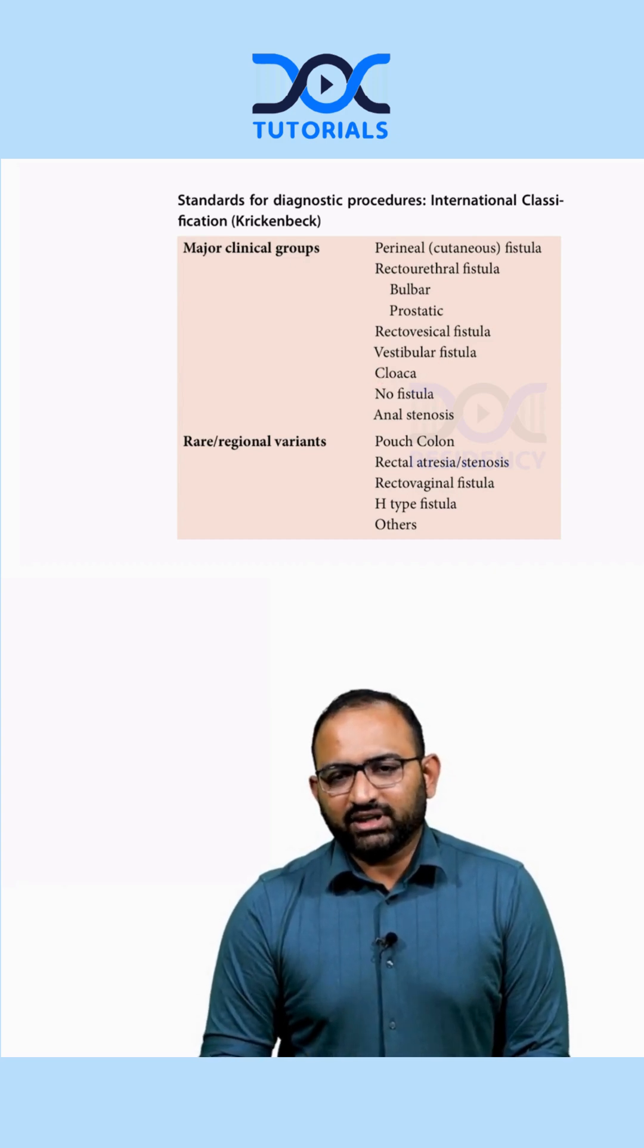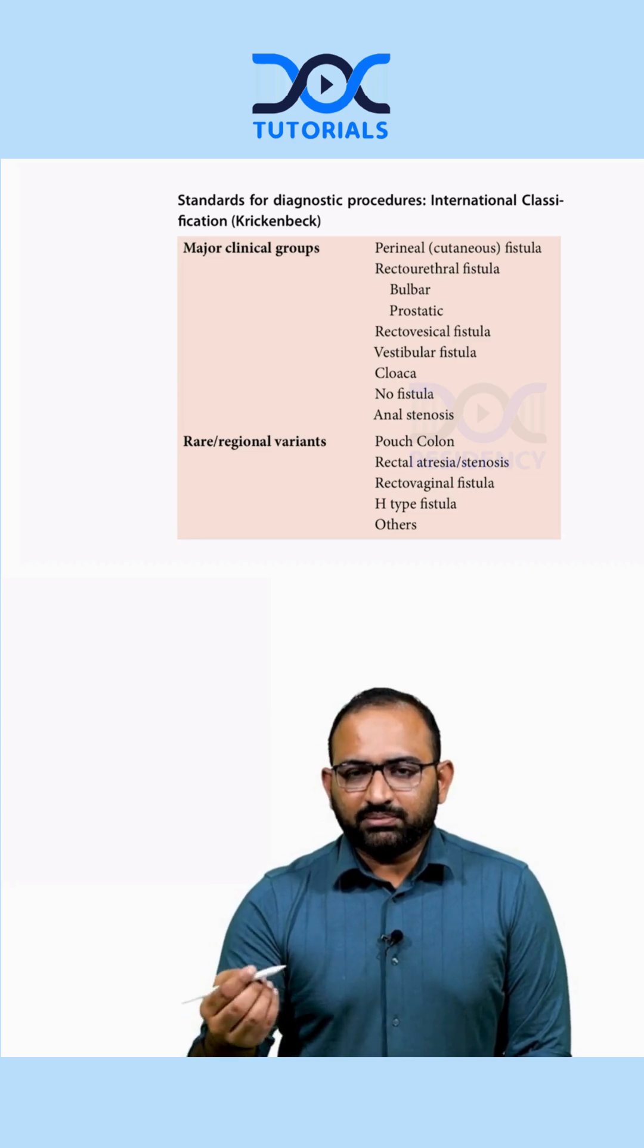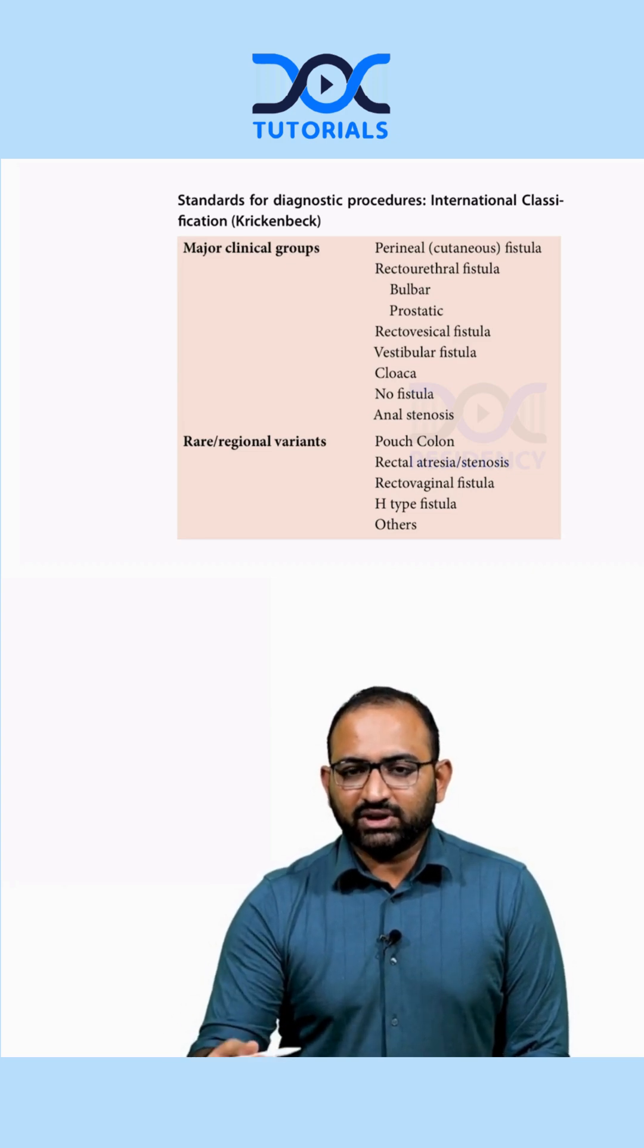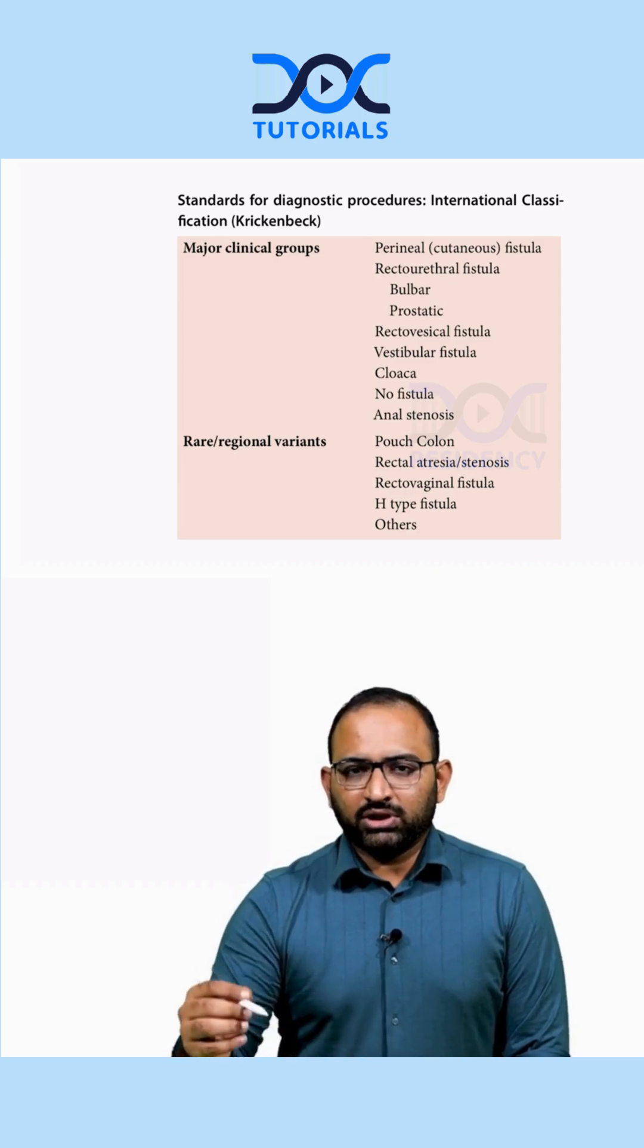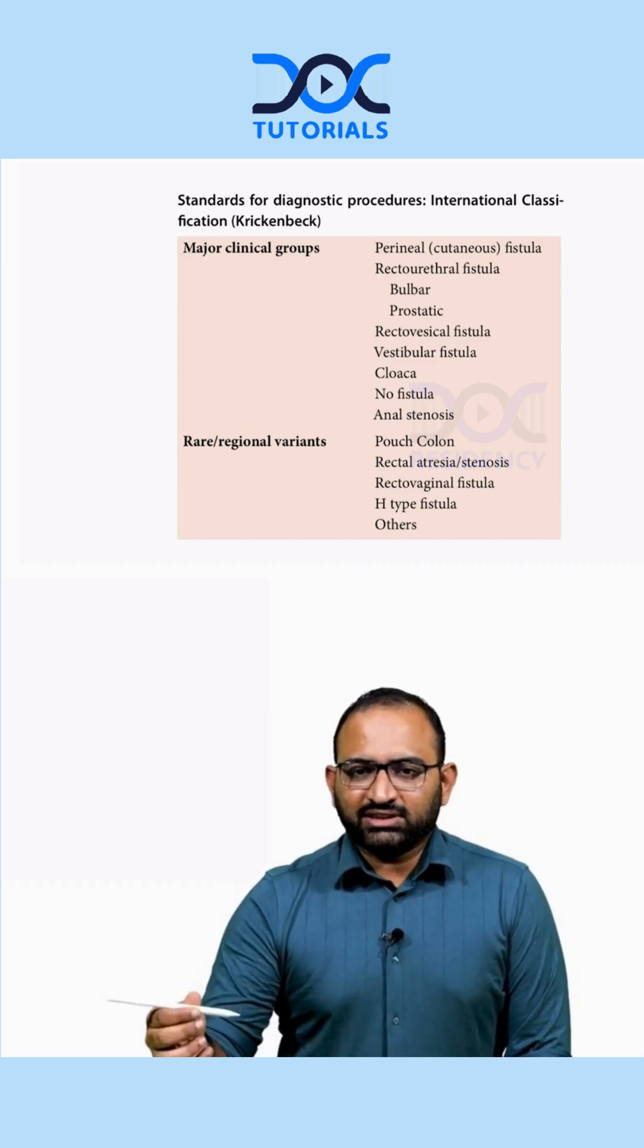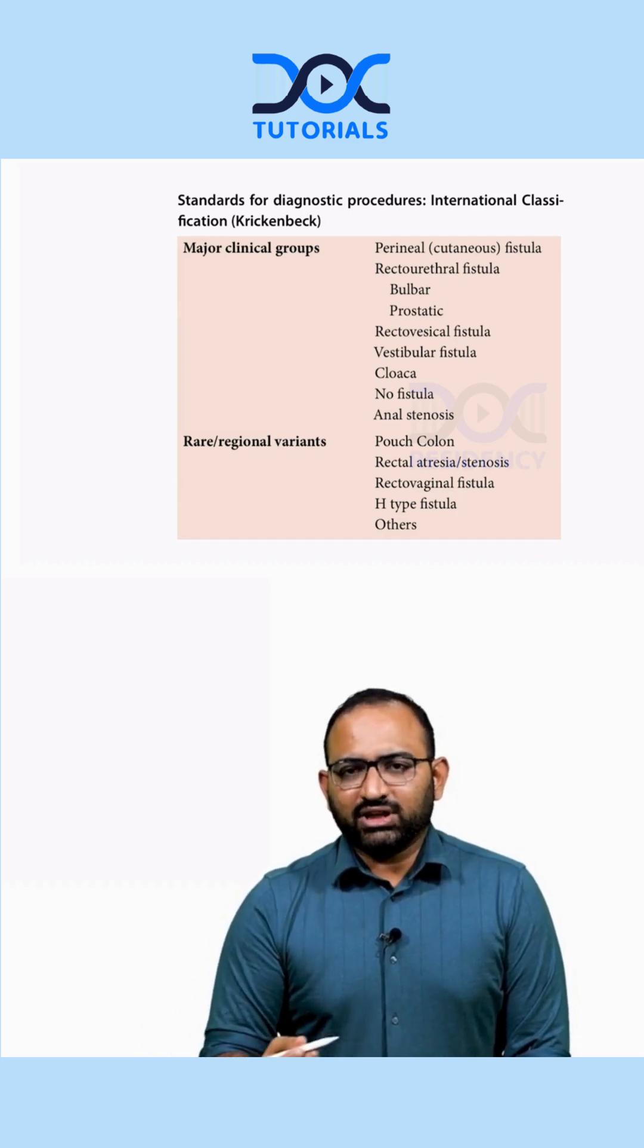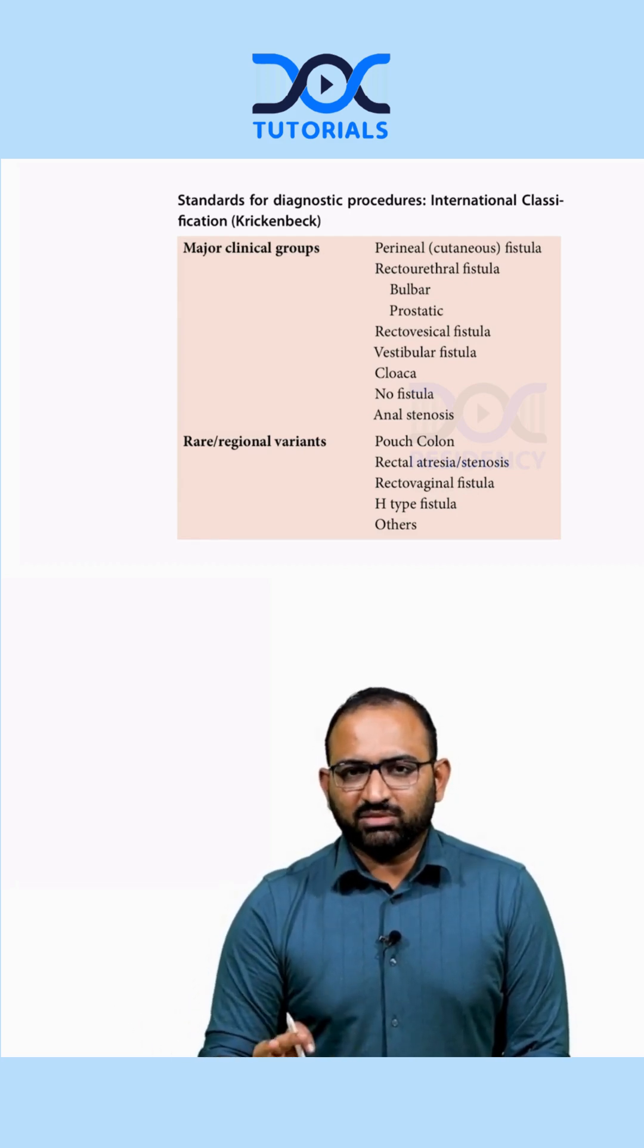Cloaca is seen only in females, where there is only a single perineal opening between the labia. This single opening houses the urinary system, the exit for the vagina, and the exit for the rectum. All three openings are seen in a single hole.